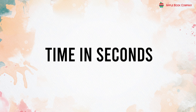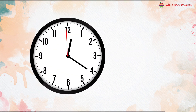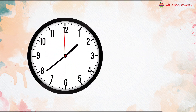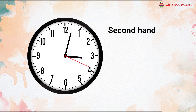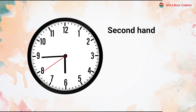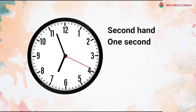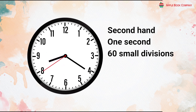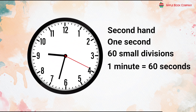Time in seconds. Some clocks and watches have 3 hands. We can see the thinnest, third hand moving fast — this is the second hand. The time taken by the second hand to move from one small division to the next is 1 second. The second hand covers 60 small divisions in 1 minute. Therefore, 1 minute = 60 seconds.